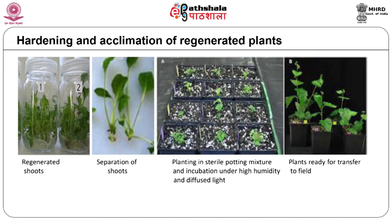Plants obtained in vitro are photomixotrophic and show poor stomatal regulation. These plants need to be hardened so that they attain photosynthetic competency and are also able to regulate stomatal movements. This is carried out by gradually reducing the carbon supplement in the medium and by increasing the light intensity. The plant also needs to get acclimated to drier conditions prevailing outside the culture vessel, which is done by leaving the culture vessels open for increased duration when they show functional photosynthesis.